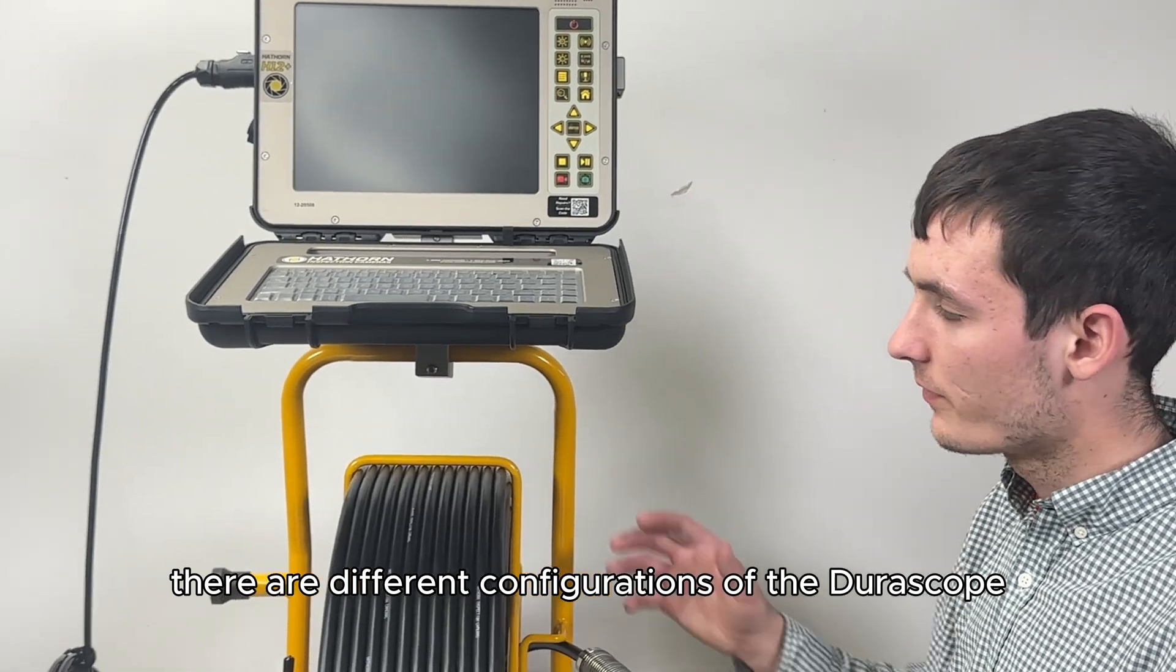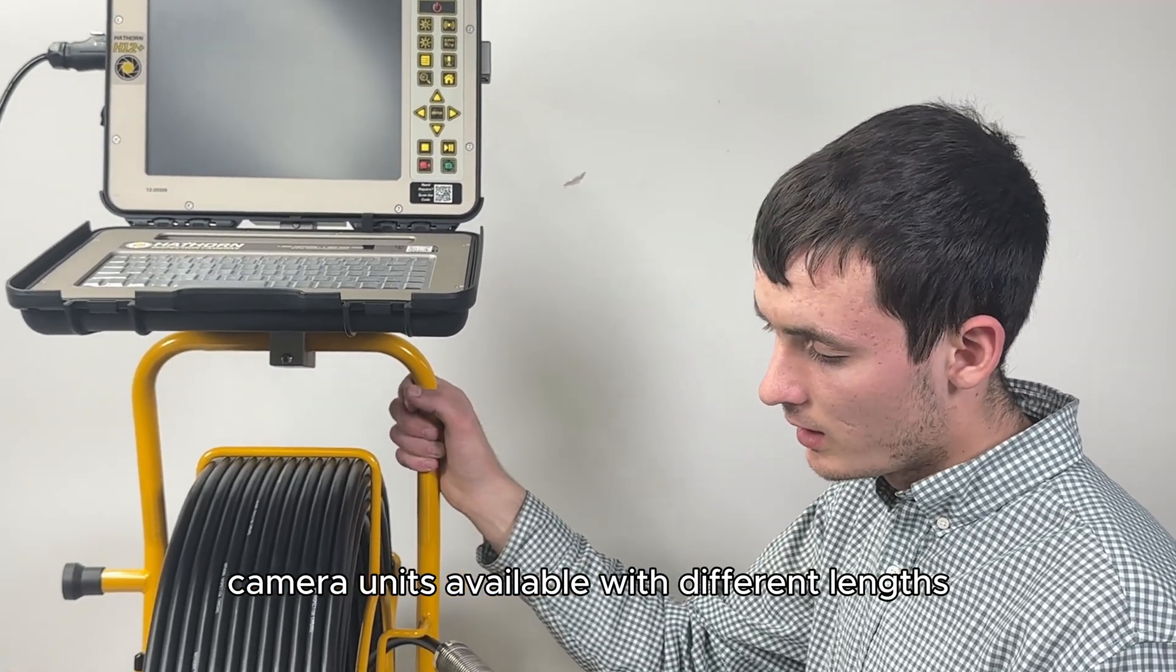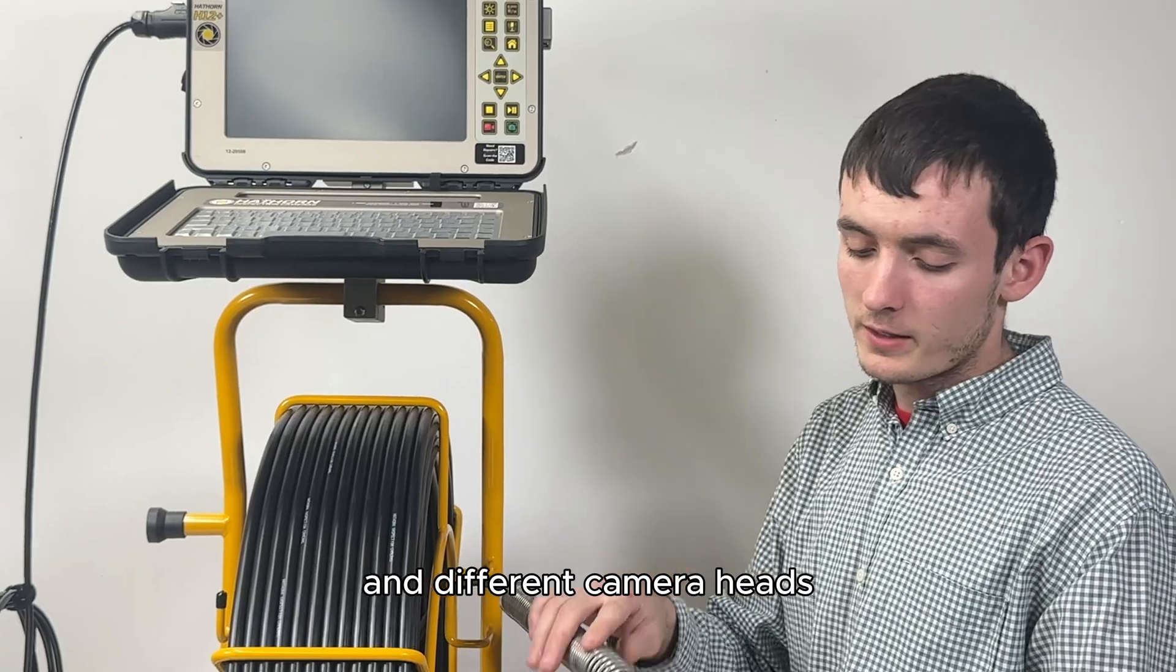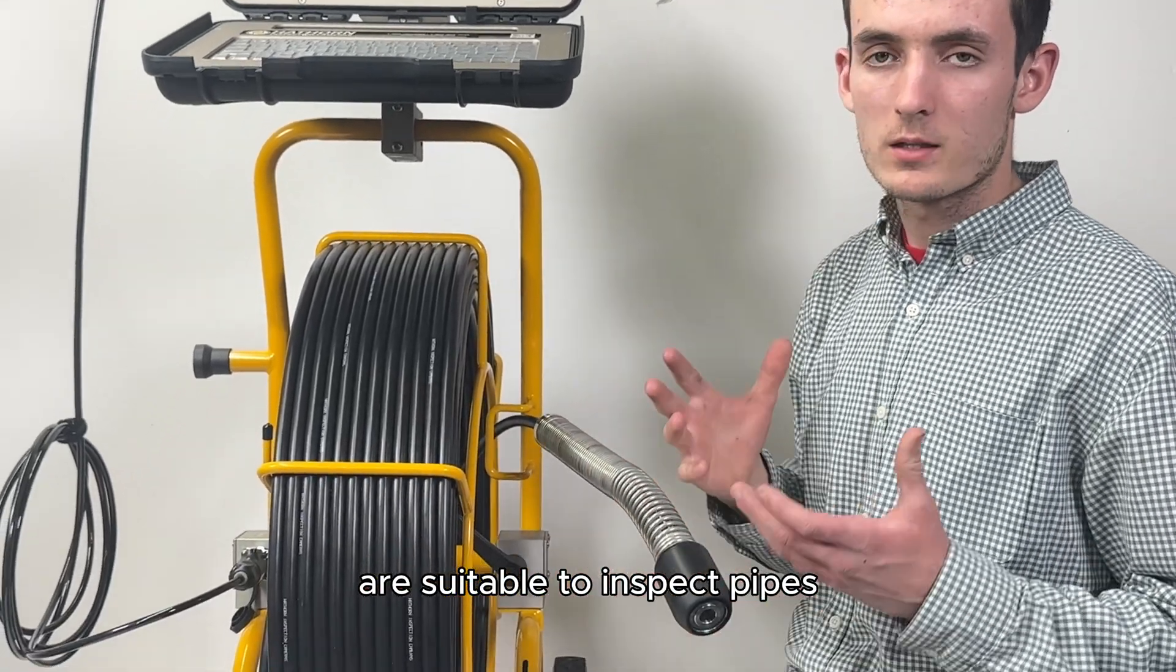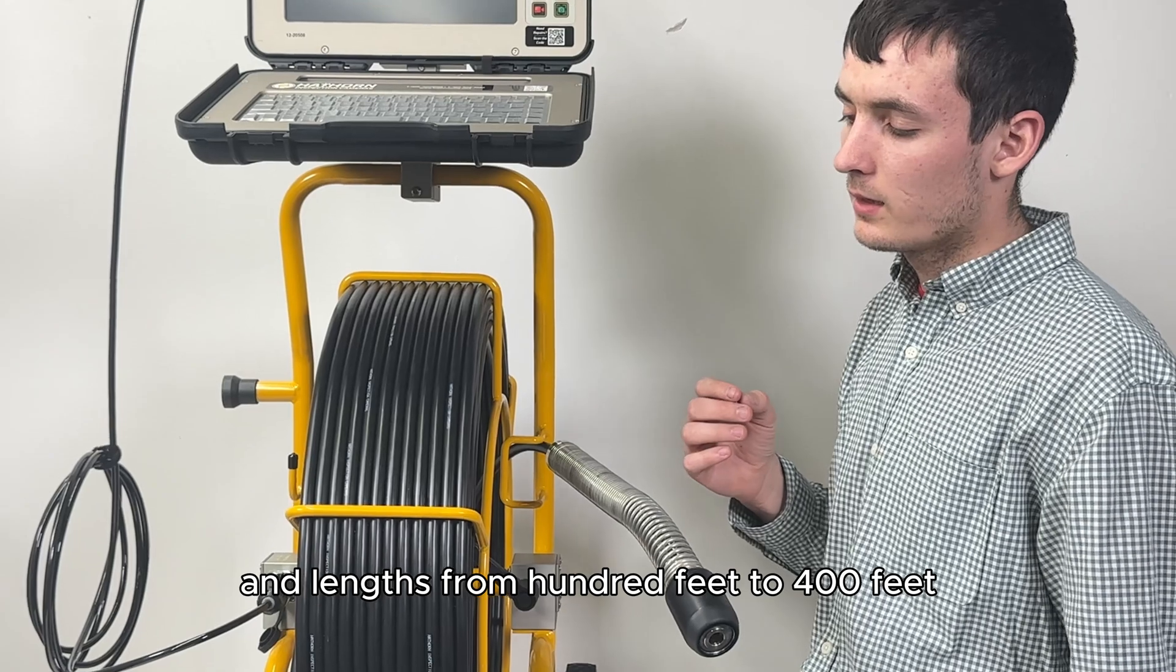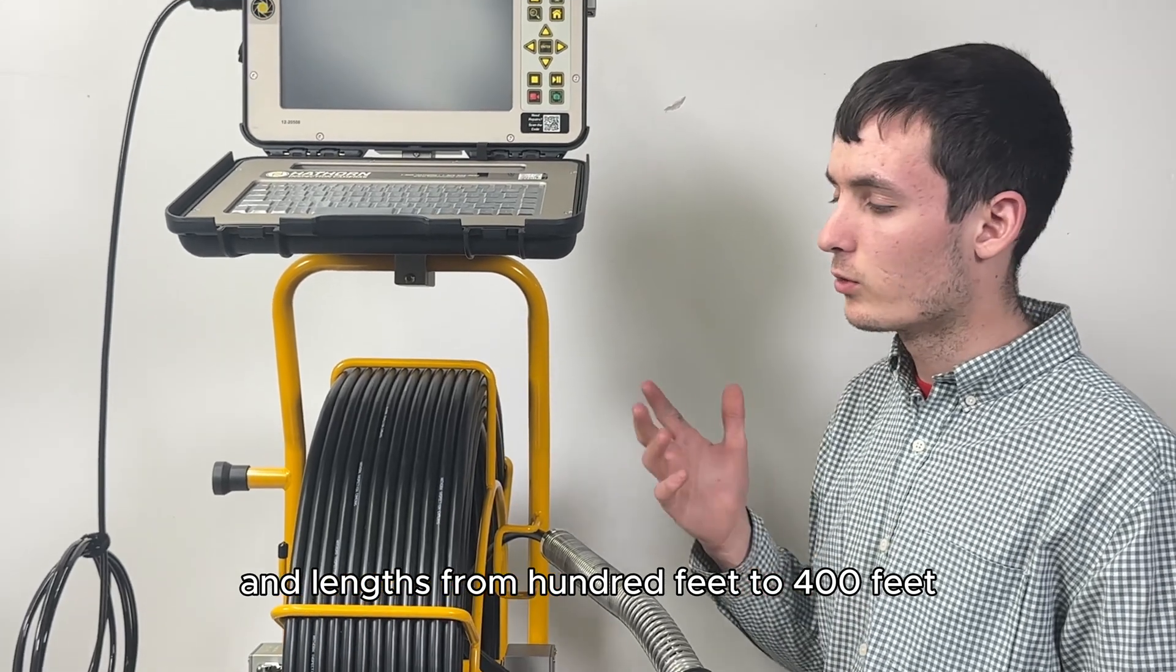There are different configurations of the Durascope camera units available with different lengths and different camera heads suitable to inspect pipes from 2 inches to 12 inches and lengths from 100 feet to 400 feet.